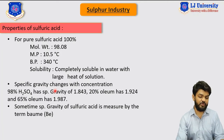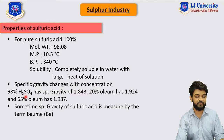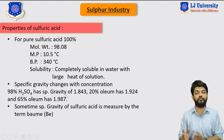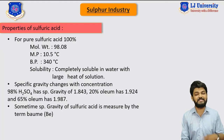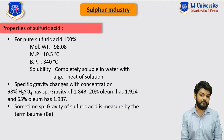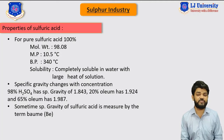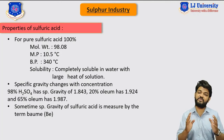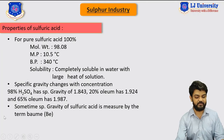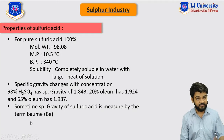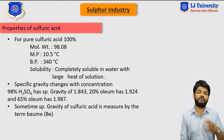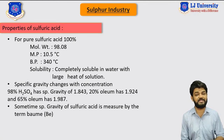The specific gravity of sulfuric acid changes with its concentration. 98% H2SO4 has a specific gravity of 1.843, while 20% oleum has a specific gravity of 1.924, meaning that as the concentration of sulfuric acid increases the specific gravity also increases. 65% oleum has a specific gravity of 1.987. Sometimes the specific gravity of sulfuric acid is measured by the term BOMI, which is the alternative unit for specific gravity of sulfuric acid.